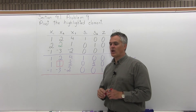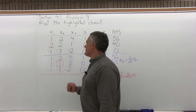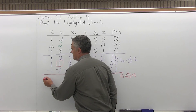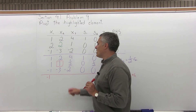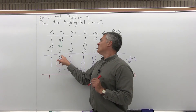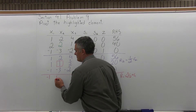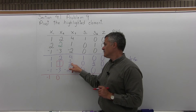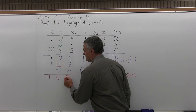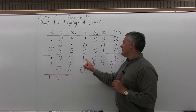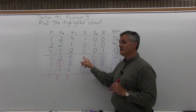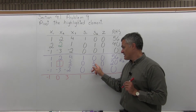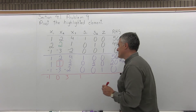Applying the equation to the whole top row: negative 2 times 1 plus 1 is negative 1; in the X2 column, negative 2 times 1 plus 2 is 0 — which is what I wanted; negative 2 times 1/2 plus 4 is positive 3; negative 2 times 0 plus 1 is 1; negative 2 times 1/2 plus 0 is minus 1; and negative 2 times 0 plus 0 is 0.